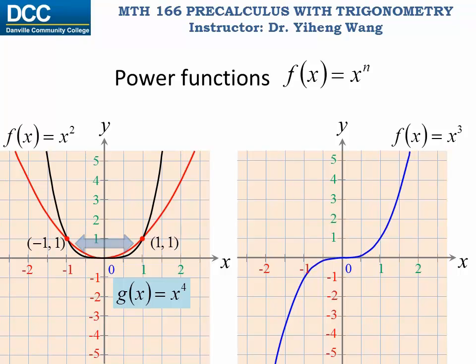But outside the negative one to one interval, the graph of the power function with higher degree is steeper. For power functions with even higher degree — for example, x to the sixth power or eighth power — this trend continues.